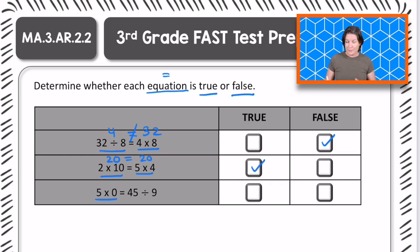And now for the last one. So on the left side, we have 5 times 0. And anytime we have a factor of 0, the product is also 0. And then on the right side, we have 45 divided by 9. What is 45 divided by 9? Yeah, it's 5. Okay. Is 0 equal to 5?